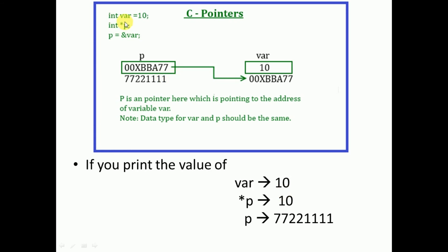In this example, we have taken one variable: int var, a simple variable initialized with 10. Whenever you declare a variable like this, a block of memory is allocated, labeled with the name of the variable var, and the value 10 is stored there. Whenever a memory block is allocated, it will have some address — in our example, the address is 0x00bba77. This is the address of this memory block.